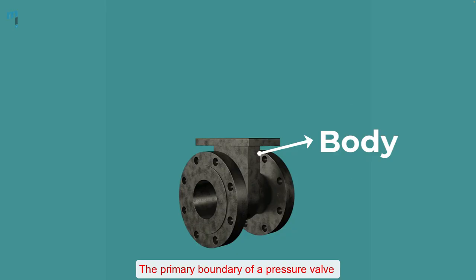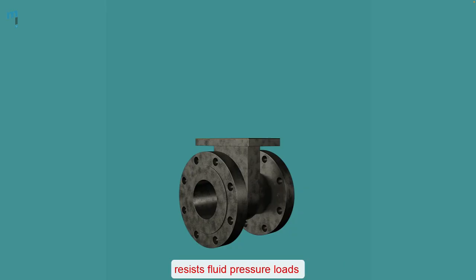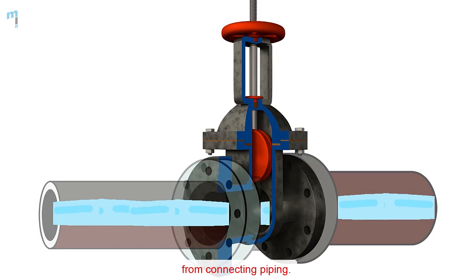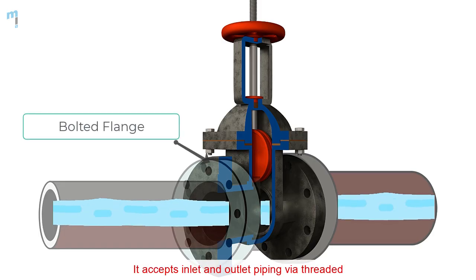Valve body: The primary boundary of a pressure valve is the valve body, also known as the shell and it holds all the parts together. A valve's body or first pressure boundary resists fluid pressure loads from connecting piping. It accepts inlet and outlet piping via threaded, bolted or welded connections.